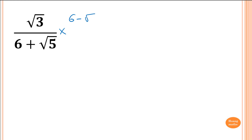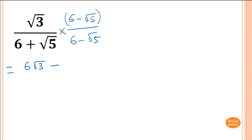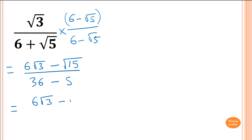So I multiply by 6 minus square root of 5, over 6 minus square root of 5. The numerator: 6 times square root of 3, minus square root of 3 times square root of 5 which is square root of 15. On the bottom, using difference of two squares: 6 squared is 36, minus square root of 5 squared which is 5. Simplifying: the numerator is 6 square root of 3 minus square root of 15. On the bottom, 36 minus 5 is 31. And I cannot simplify any further, so I stop there.